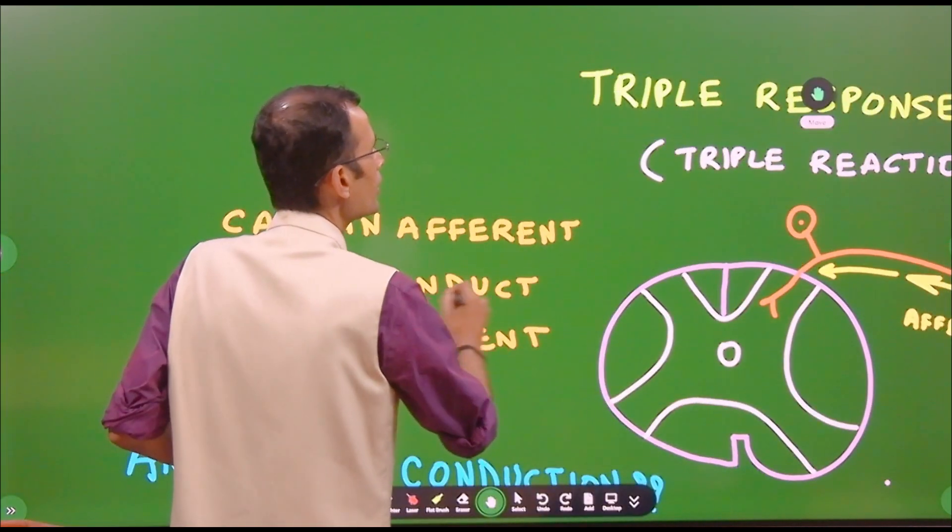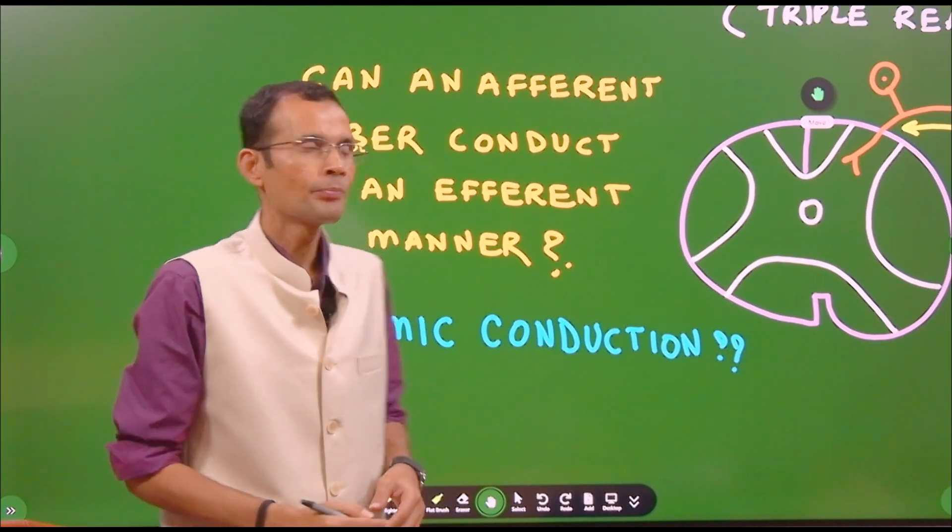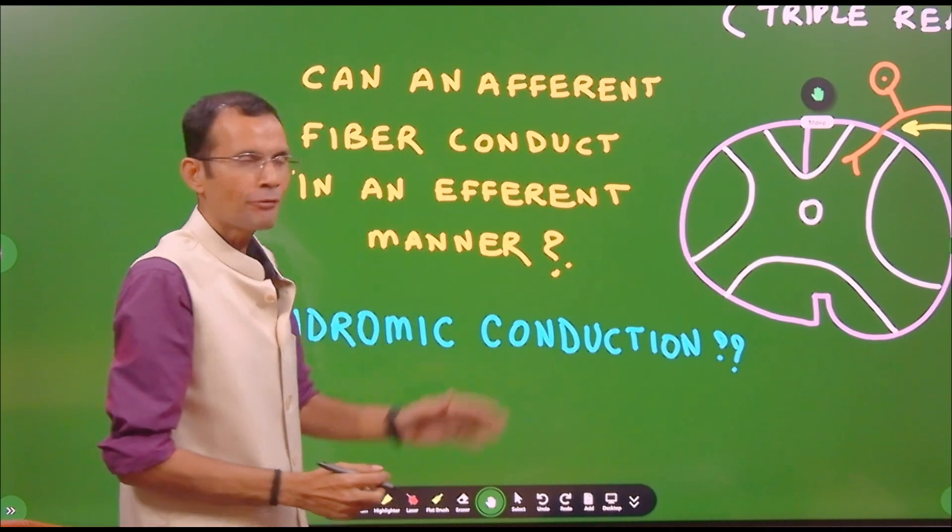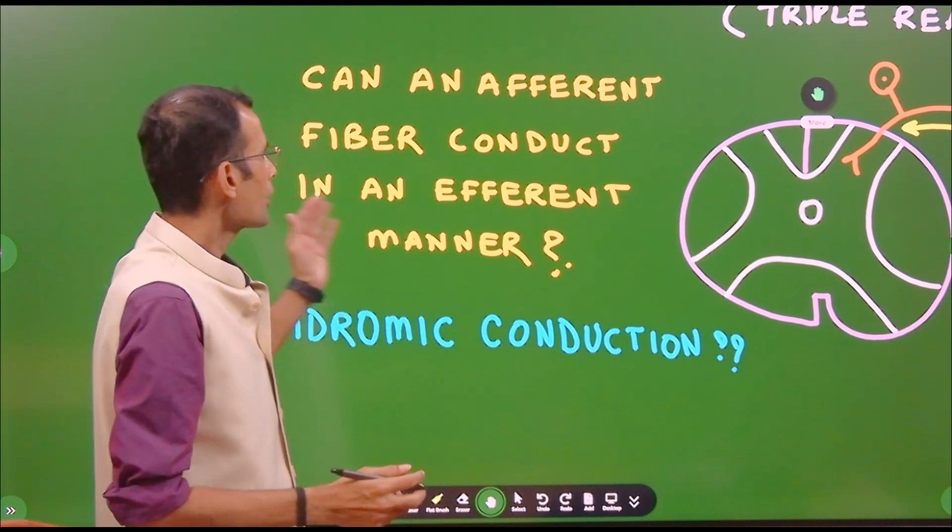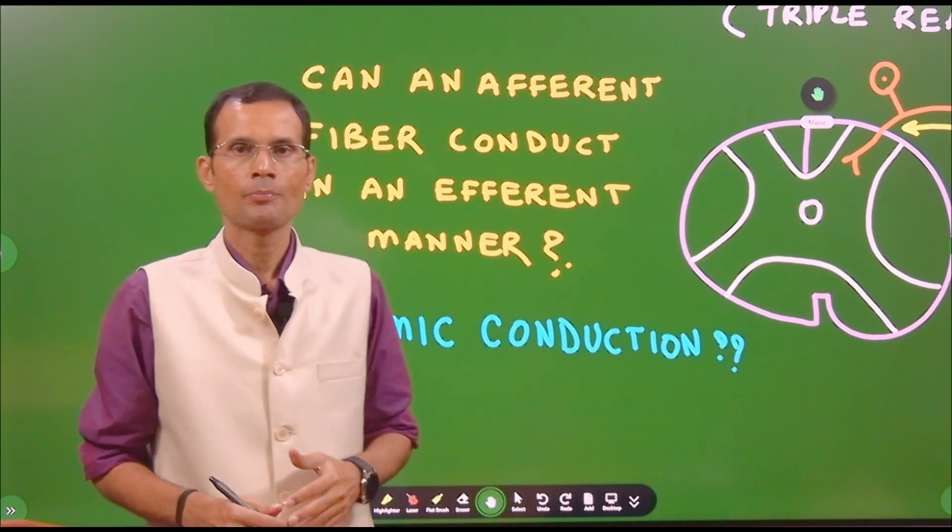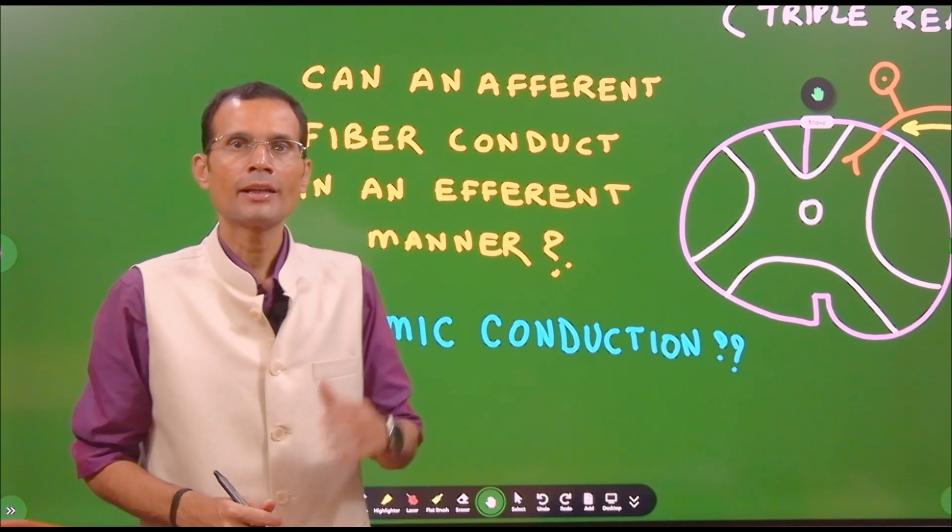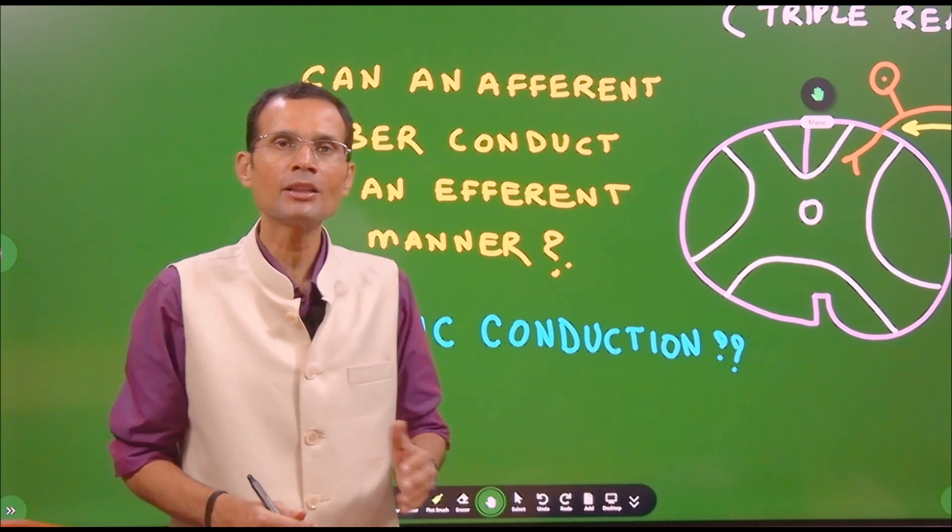Before we start with this triple response, we need to answer one question. Can an afferent nerve fiber conduct the impulse in an efferent fashion? Is that possible? It is called as antidromic conduction. Does it happen anywhere in the body?